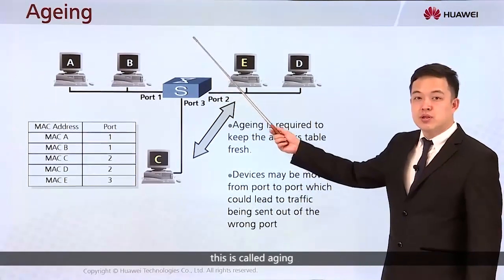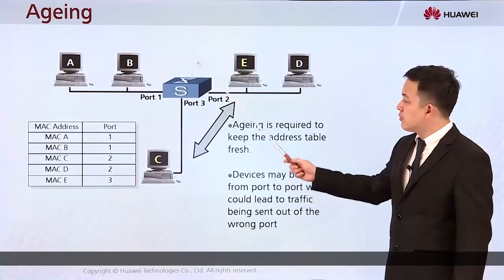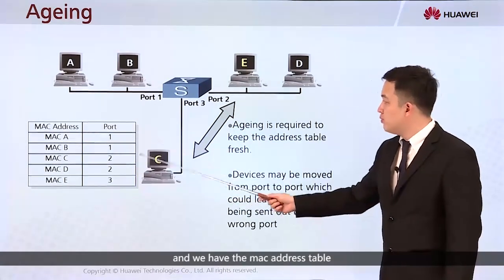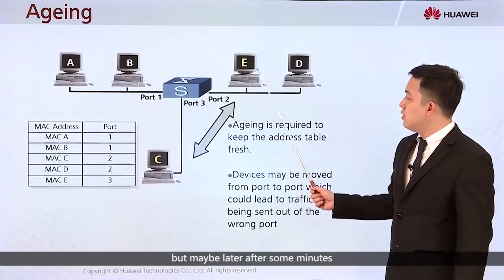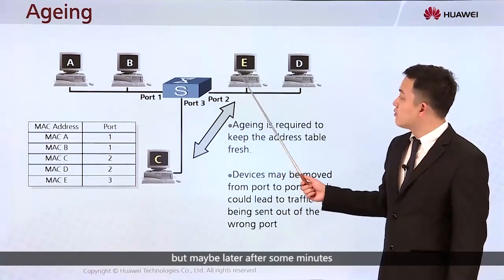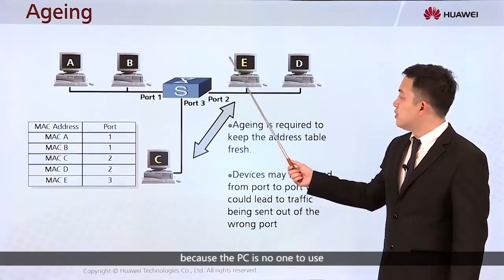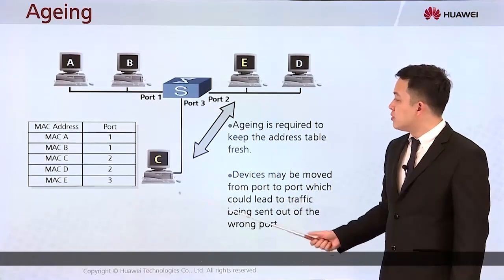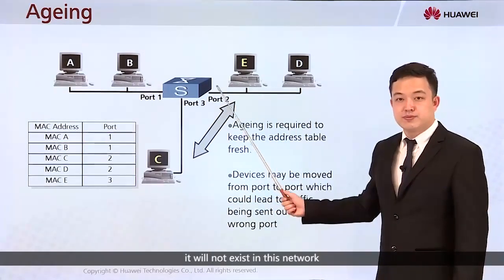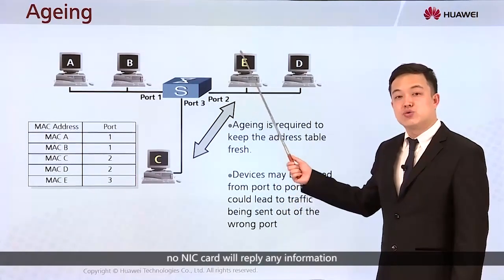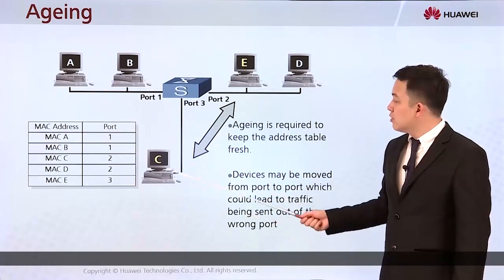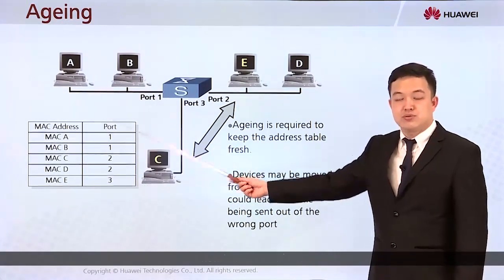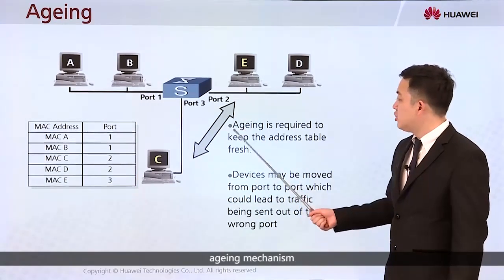This process is called aging. Multiple PCs are connected to the switch and we have the MAC address table. But maybe after some minutes, because a PC has no one using it, it may be powered off. Those two PCs power off and will no longer exist in the network — no NIC card will send any information. So how do we keep the MAC address table fresh? The switch uses an aging mechanism.